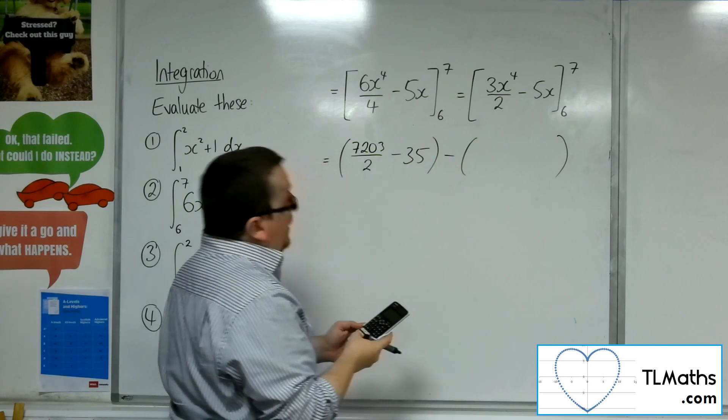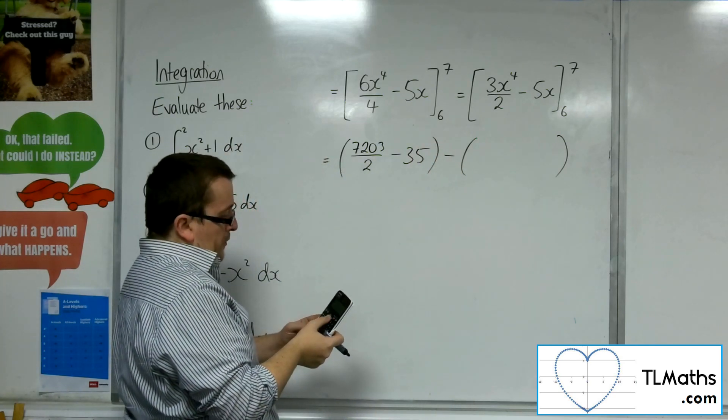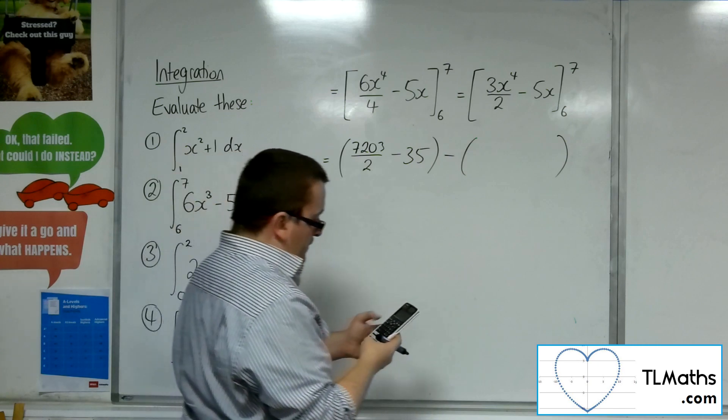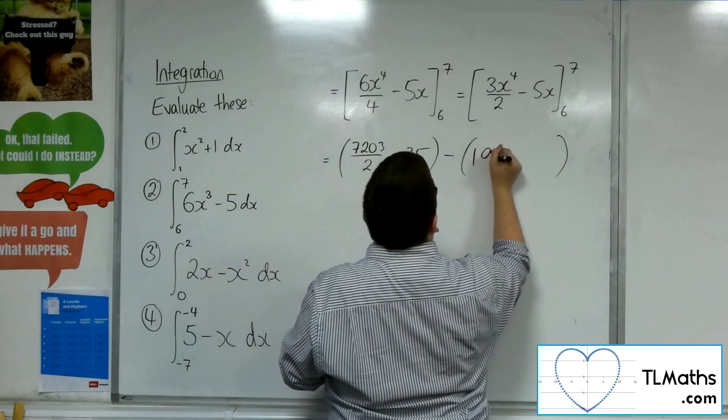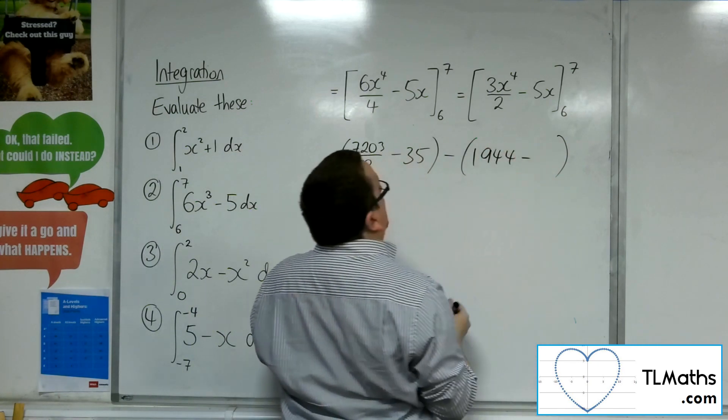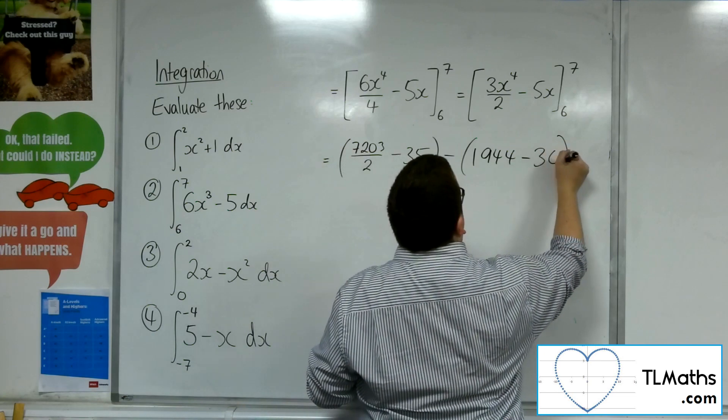Then substitute in the 6. So 3 lots of 6 to the 4 divided by 2 is 1,944, take away 5 lots of 6, so take away 30.